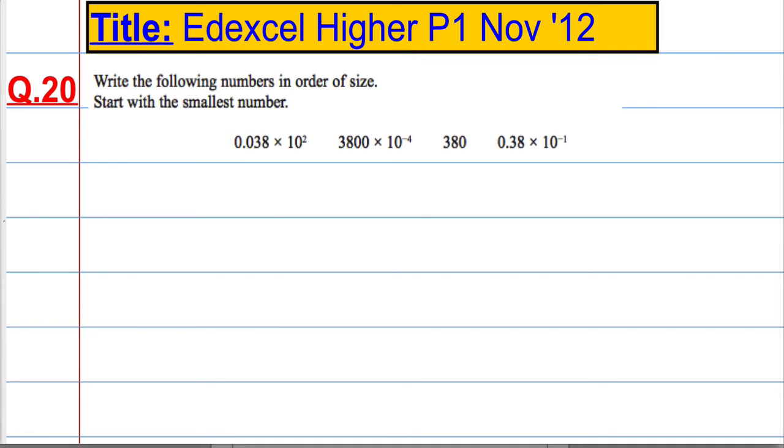Okay, the next question here is on standard form. We're asked to write the following numbers in order of size and start with the smallest number. The best thing to do here is just convert all the numbers into a regular number, so not using standard form.